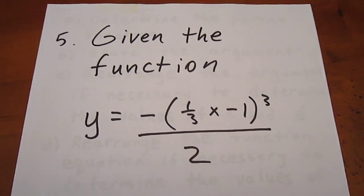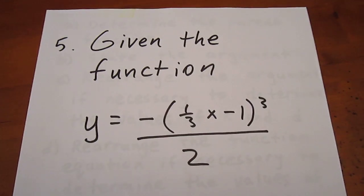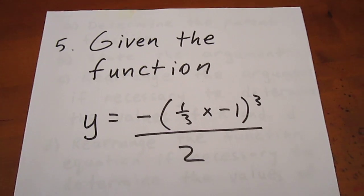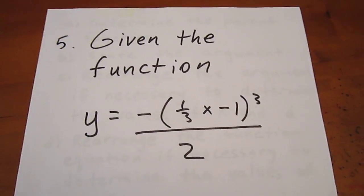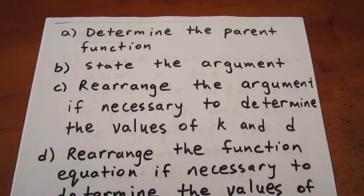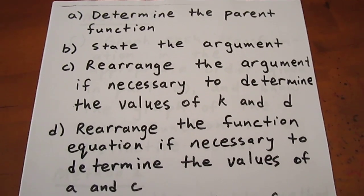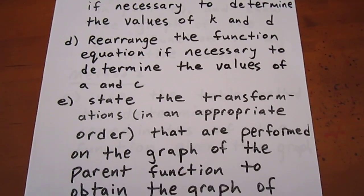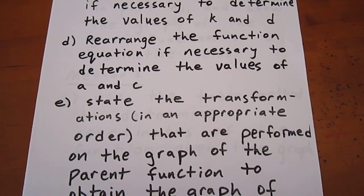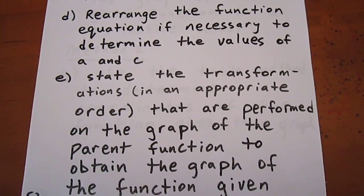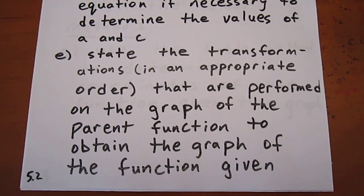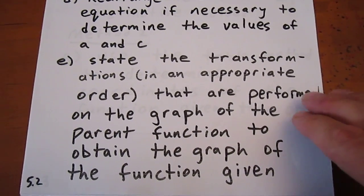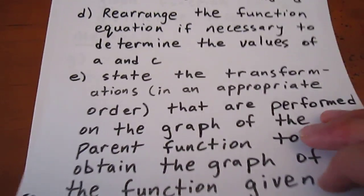In this question, we're given the function y equals negative quantity one-third x minus 1, quantity cubed, and then all of that over 2. We're asked to determine the parent function, state the argument, rearrange the argument if necessary to determine the values of k and d — indicators of horizontal transformations — rearrange the function equation to determine the values of a and c — indicators of vertical transformations — and state the transformations in an appropriate order performed on the graph of the parent function to obtain the graph of the given function.